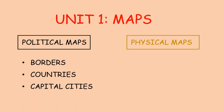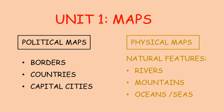Political maps show borders, countries, and capital cities. And physical maps show natural features such as rivers, mountains, oceans and seas.